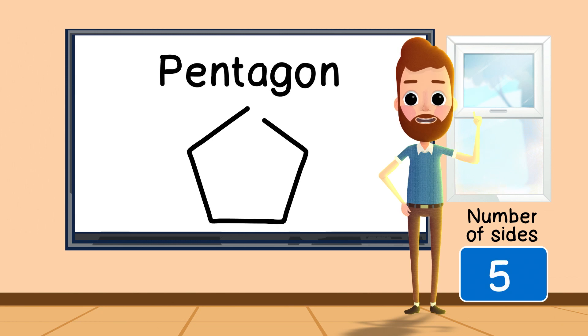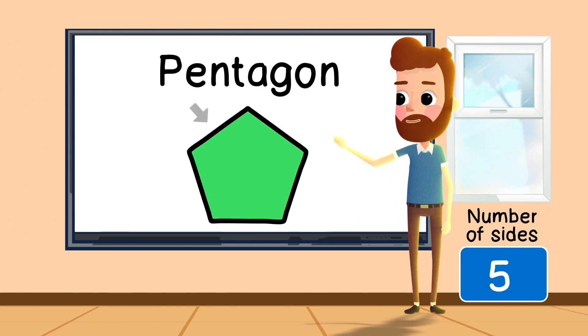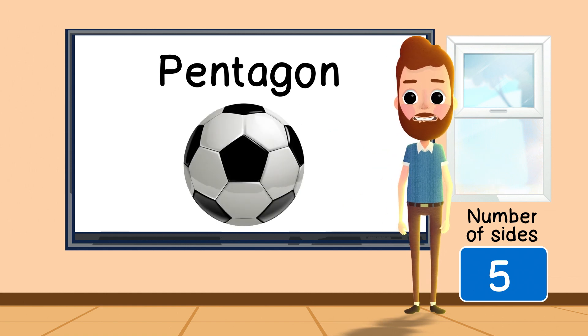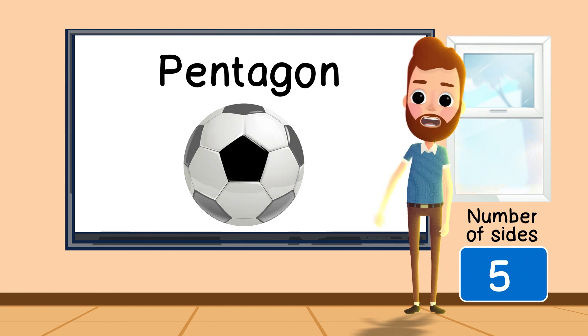A five-sided shape is called a pentagon. Side one, side two, side three, side four, and side five. An example of a pentagon can be seen on a football.